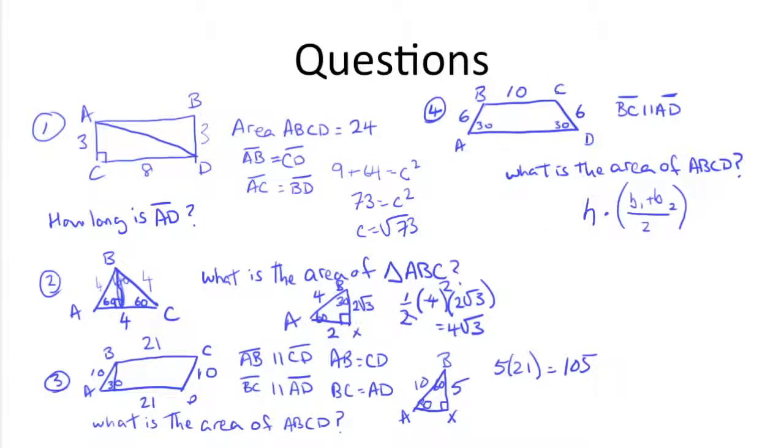So we know one base is 10. We need to find out AD, the other base, and we need to figure out the height. So to figure out the height, we can drop a perpendicular down from B, and we know this interior angle is 30, and we know that because of that, that has to be 60. We know the hypotenuse is 6, so we know the side opposite 30 has to be 3, and the other side has to be 3 root 3.